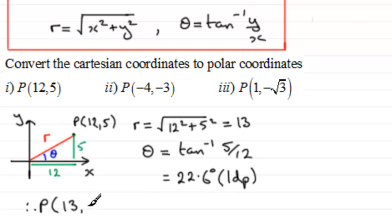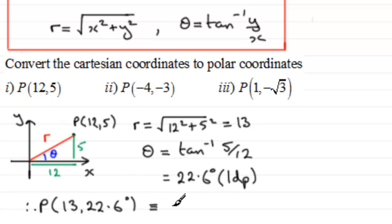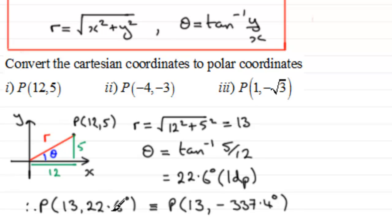Therefore P in polar coordinates is (13, 22.6°). It's not the only way we could express P — for theta we could go the other way in a clockwise sense, which is always the negative angle, so P could also be written as (13, −337.4°), since 360° minus 22.6° gives that. I prefer using positive angles, but you will occasionally see negative angles used. Now let's move on to the second one.